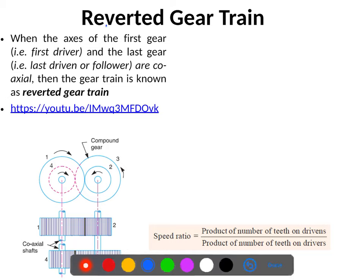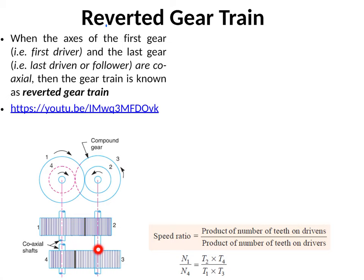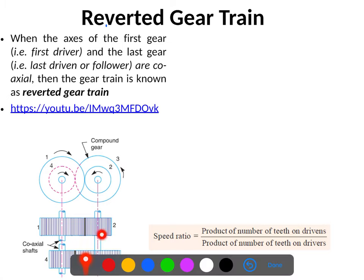A reverted gear train is one where the axis of the first gear (first driver) and the last gear (last driven or follower) are coaxial. In this arrangement, gear 1 engages gear 2, while gear 2 and gear 3 are mounted on the same shaft. Gear 3 engages gear 4, and the axis of gear 4 is coaxial with the axis of gear 1. This type of arrangement is called a reverted gear train.